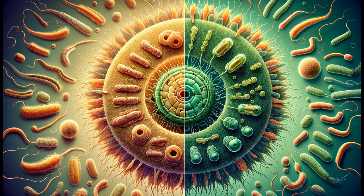Phages exhibit two main life cycles: lytic and lysogenic. In the lytic cycle, phages destroy bacteria, while in the lysogenic cycle, the phage integrates into the host.